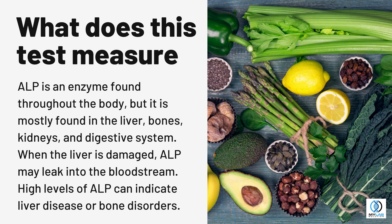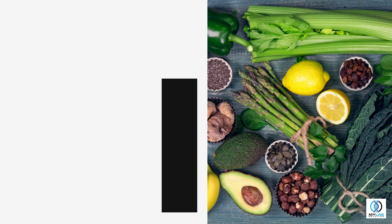When the liver is damaged, ALP may leak into the bloodstream. High levels of ALP can indicate liver disease or bone disorders.